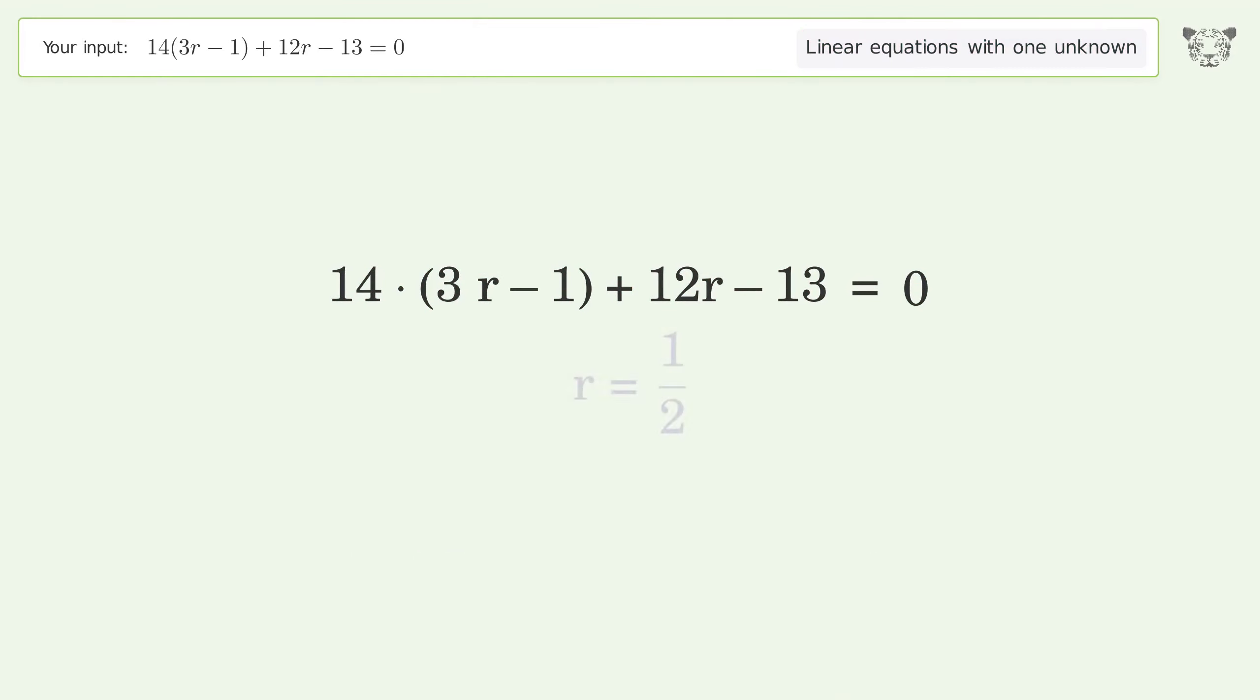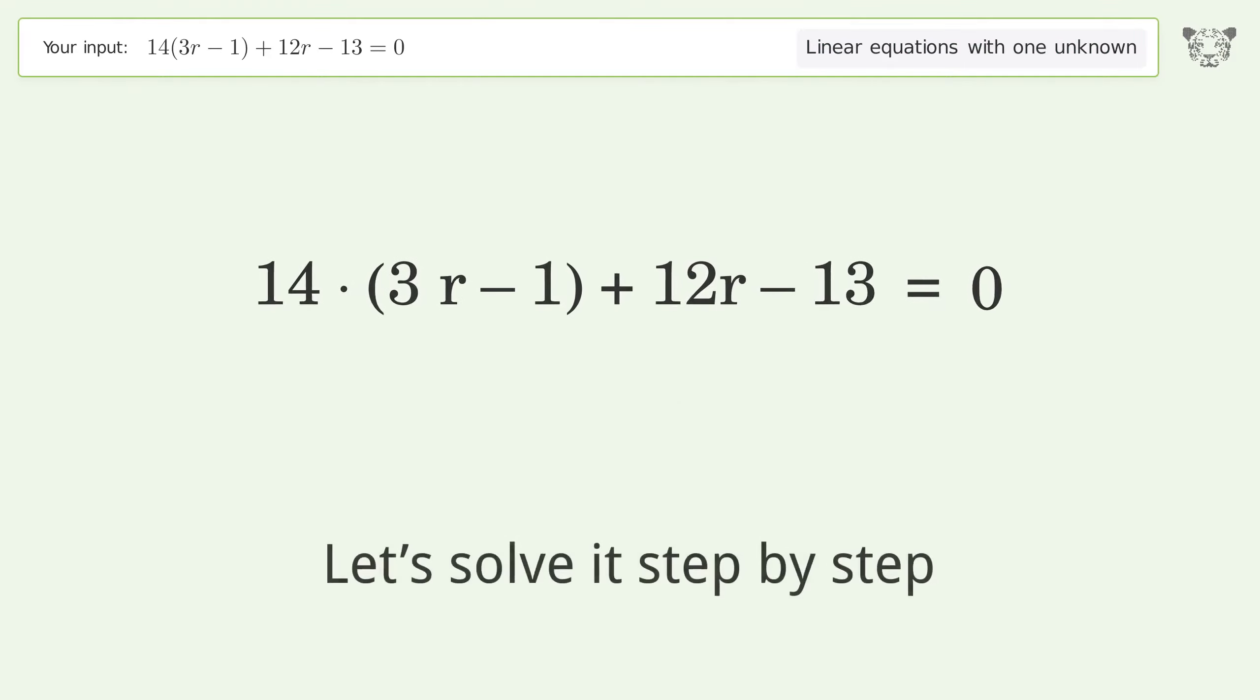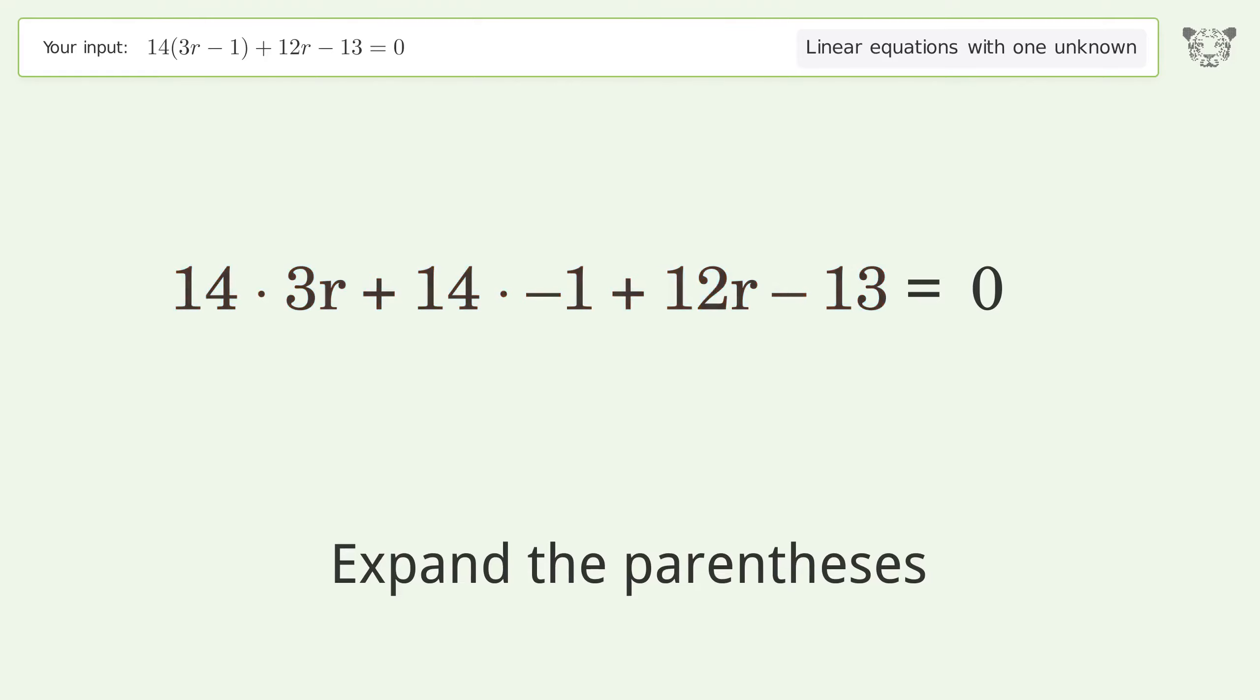You ask Tiger to solve this. It deals with linear equations with one unknown. The final result is r equals 1 over 2. Let's solve it step by step. Simplify the expression. Expand the parentheses.